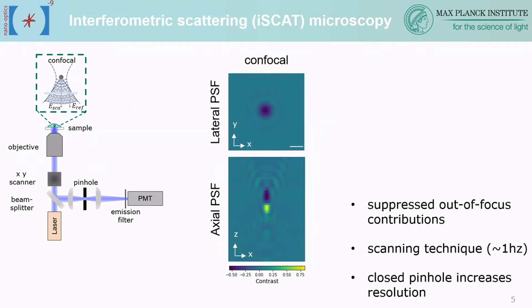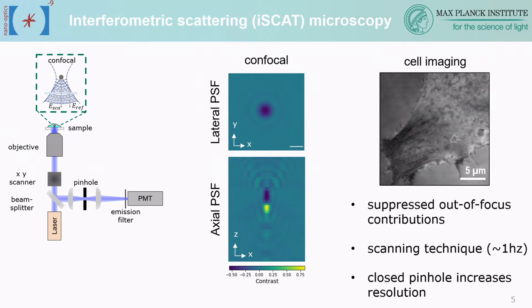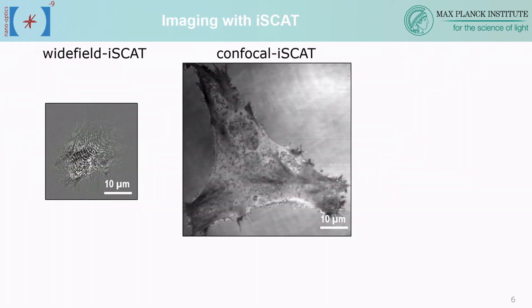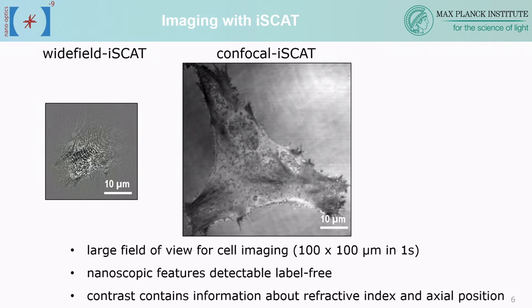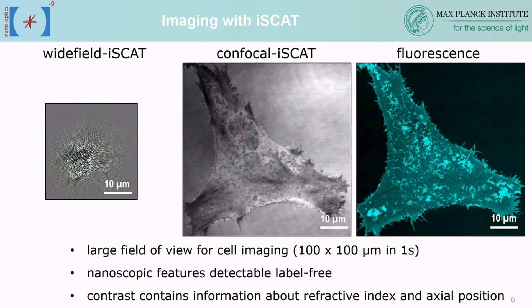This is what the point spread function then looks like laterally and axially — we've lost much of the side lobes. For cell imaging, here is the same cell where we already see much finer detail. Comparing wide-field iSCAT and confocal iSCAT side by side: our confocal system covers 100 by 100 microns in about a second and is able to detect nanoscopic features. We can simultaneously record fluorescence, and many of the fine structures visible in the confocal iSCAT image are membrane protrusions fluorescently labeled with GPI-GFP.